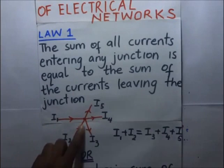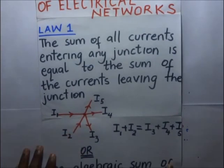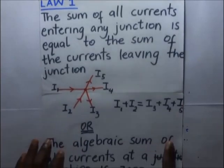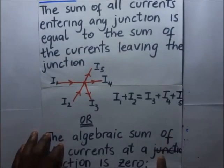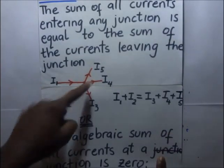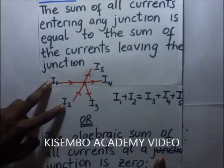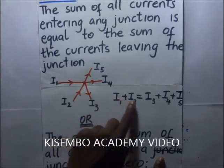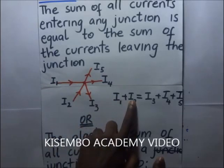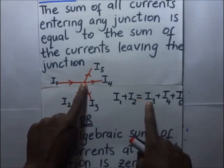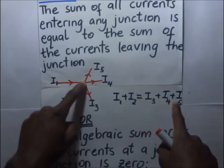For example, in this simple illustration, at this junction you have currents I1 and I2 moving in, and at that same junction you have currents I5, I4, and I3 moving out. The law simply states that the sum of the currents getting in — I1 plus I2 — should be equal to the sum of the currents moving out: I3 plus I4 plus I5.